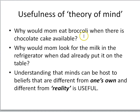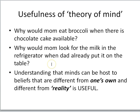For example, why would mom eat broccoli when there's chocolate cake available? She has a different mind with different preferences, maybe different beliefs about the long-term value of eating these two things. Why would mom look for the milk in the refrigerator when dad already put it on the table? Because she doesn't know that dad did that — she has a false belief that the milk is still in the refrigerator. Understanding that minds can hold beliefs different from one's own and from reality is a very useful capacity, and it's called a theory of mind.